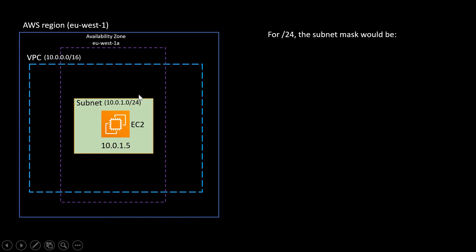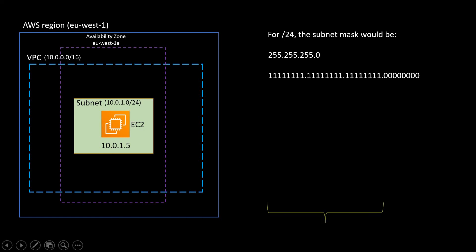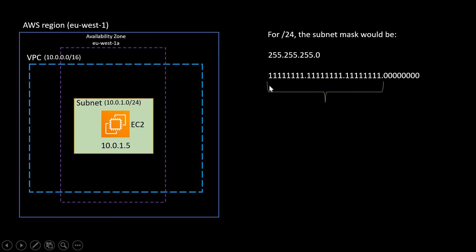For the subnet with /24, the subnet mask would have 24 bits as ones and the remaining bits as zeros, so the subnet mask is 255.255.255.0. In this subnet mask, the part which is all ones is called the network part — in this example the 24 bits — and the remaining part which is zeros is the host part.